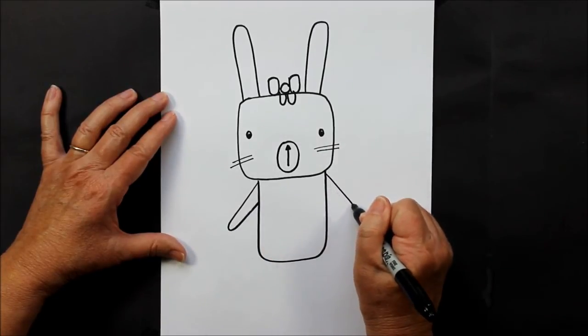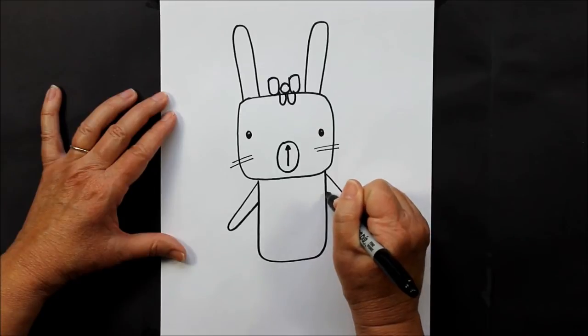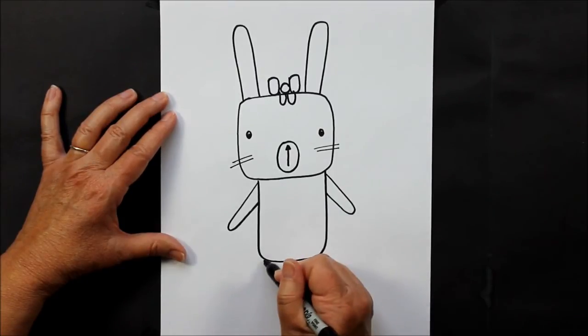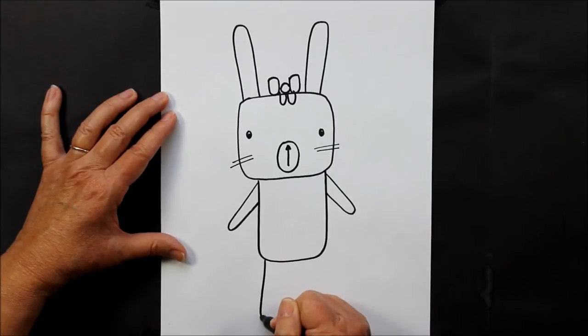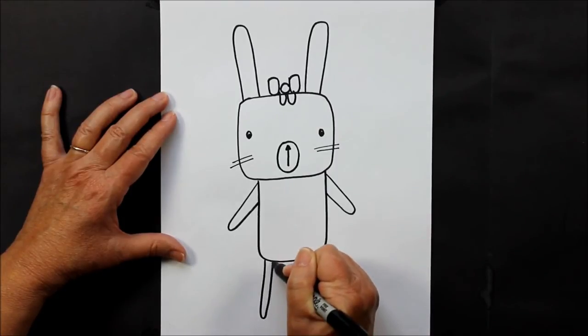And then her legs are just basically straight lines and back up, just like that.